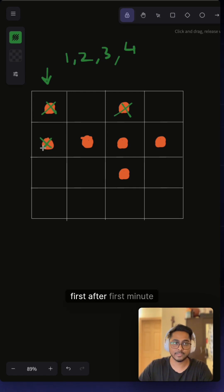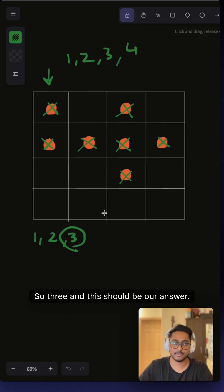That means after the first minute these two will go rotten, on the second minute this will get rotten either from these or this, and this will get rotten from this one. So this is two, and on the third minute this will get rotten, so three, and this should be our answer. We will be traversing every